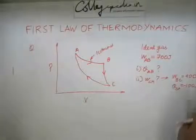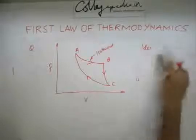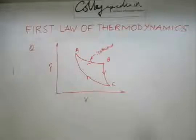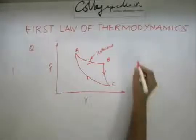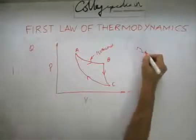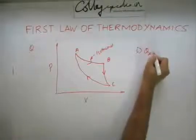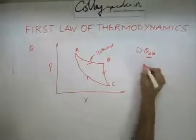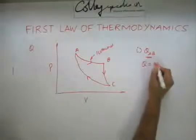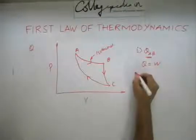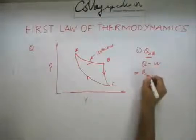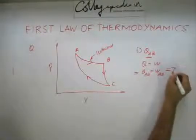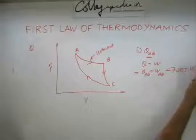Let us solve this. For the first process, where we need to find Qab: this is an isothermal process, therefore Q equals W because delta U is zero. Therefore Qab is going to be equal to Wab, which is given as 700 joules. So you have your first answer.